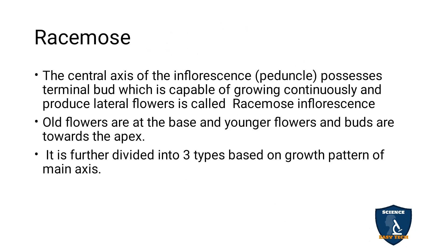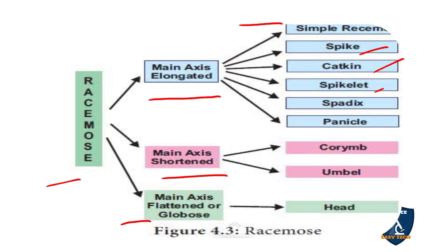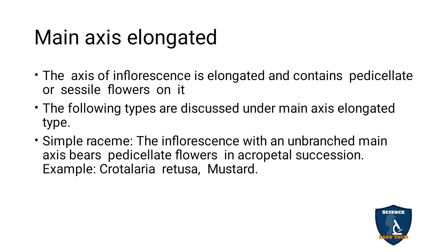Racimose inflorescence is classified into three types based on the growth pattern of the main axis: main axis elongated, main axis shortened, and main axis flattened or globose. Under main axis elongated: simple raceme, spike, catkin, spikelet, spadix, and panicle. Under main axis shortened: corymb and umbel. Under main axis flattened or globose: head.